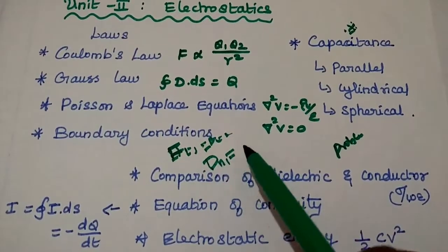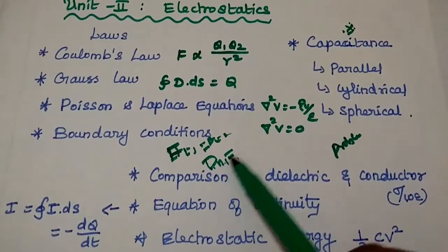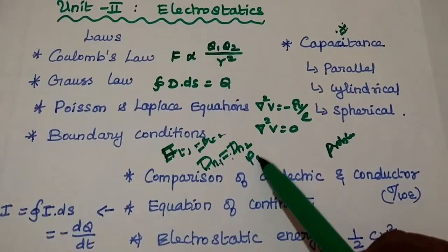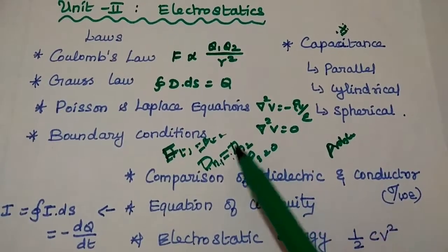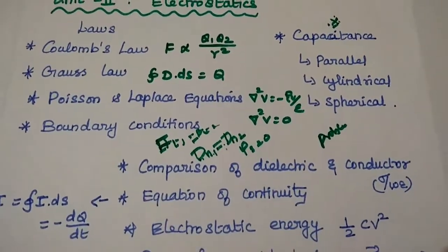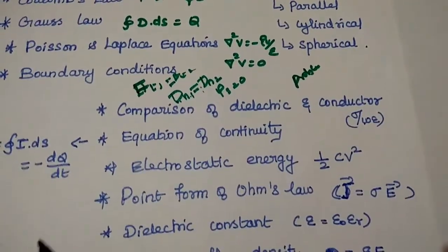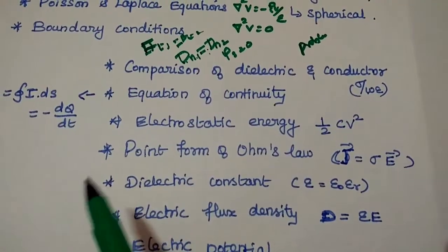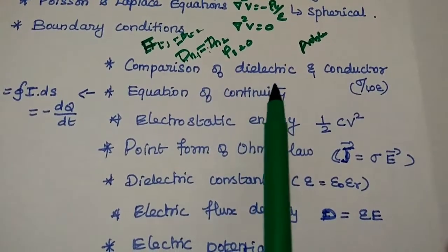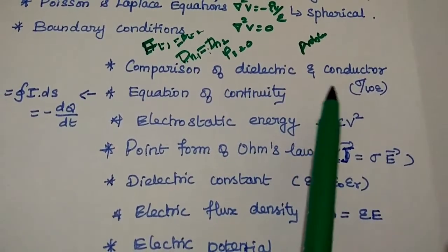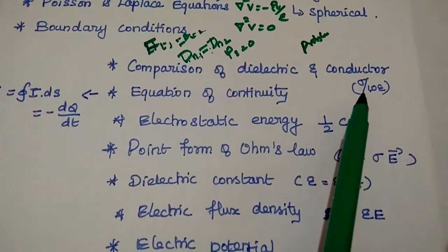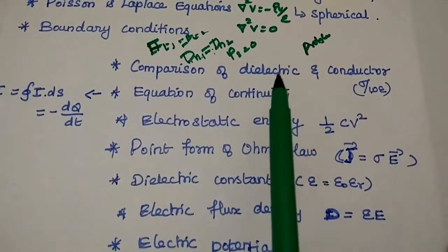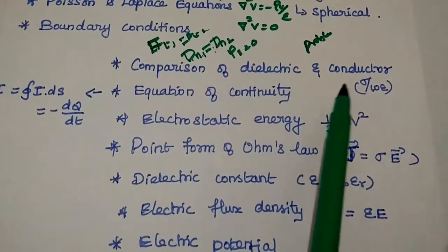That is the tangential component of electric field intensity. Next, D_N1 equals D_N2 when rho_s equals zero — that is the condition. Apart from these two important topics, we can expect two-mark questions on the comparison of dielectric and conductor, concentrating on the term sigma over omega epsilon. Based on this, we can classify the material as dielectric or conductor.